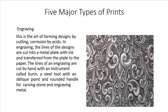Next is engraving, most commonly used for metals. This is the art of forming a design by cutting or by corrosion by acids. The lines of the design are cut into a metal plate with ink and transferred from plate to paper. The lines of an engraving are cut by hand with an instrument called a burin — a steel tool with an oblique point and rounded handle for carving stone and engraving metals.